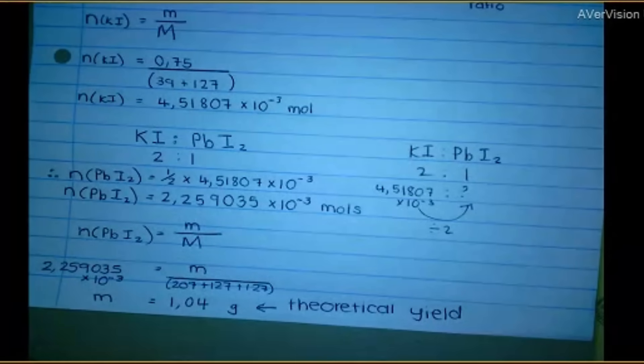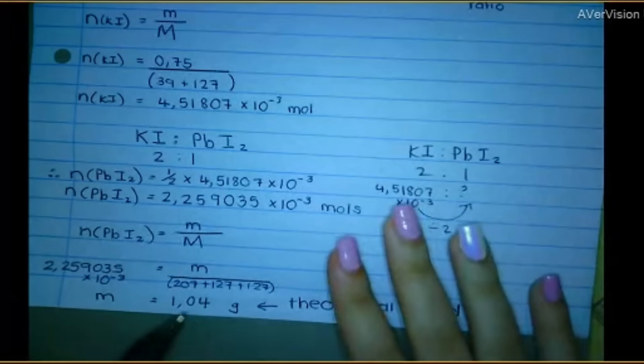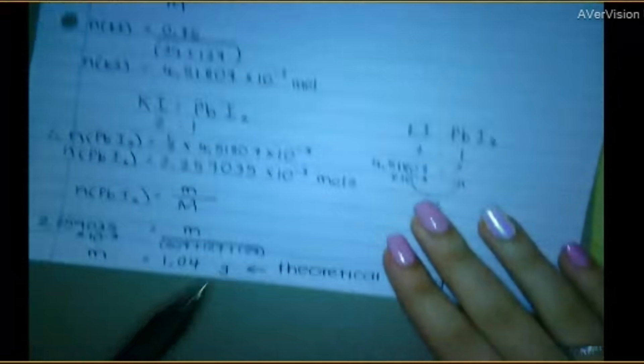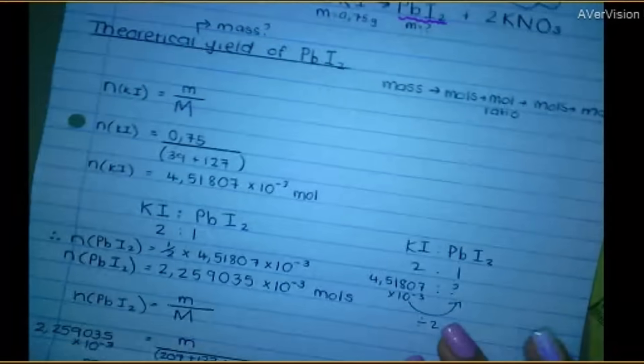But in reality, because life happens and things go wrong, maybe he spilled some stuff. I don't know. He only gets 0.583. He expected 1.04. He only got 0.583. So what is my percentage yield?